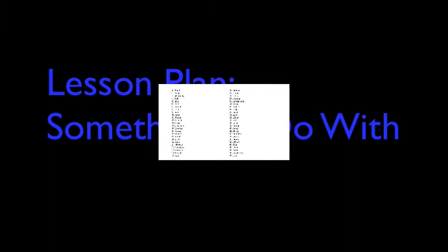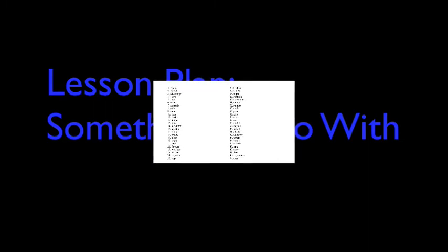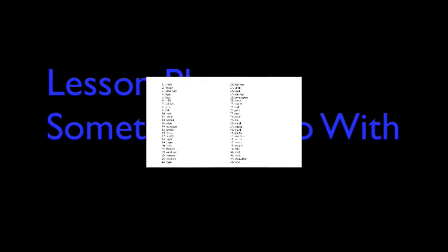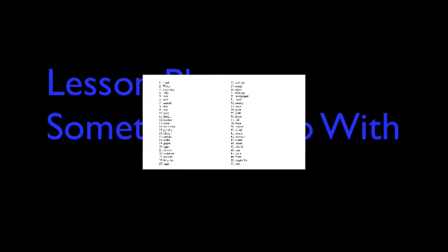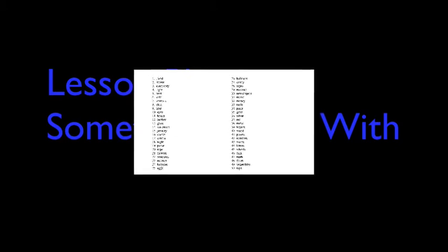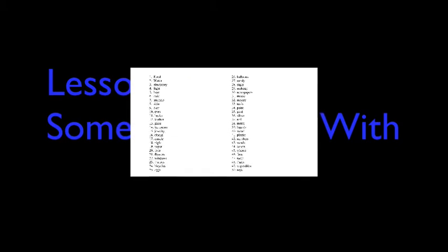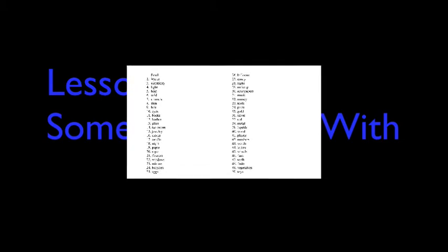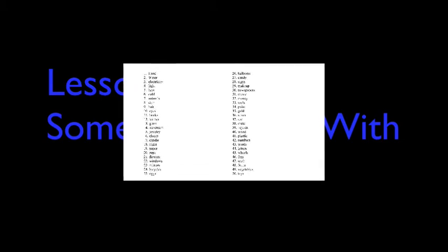For one thing, the students don't get to choose what word they're going to use. Instead, I have one of them spin a bingo cage and read off the number of the first ball that rolls out. I have preloaded the bingo cage with 50 balls numbered 1 to 50 and created a list of 50 words numbered from 1 to 50. So if, say, a number 12 ball rolls out of the cage, the word that corresponds to number 12 on the list is the word they will use.